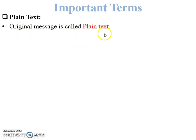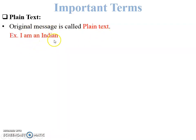Next is plain text. The definition: the original message is called plain text. For example, 'I am an Indian' — this is a message that the sender wants to send to a user on the network. This is called the original message or plain text.